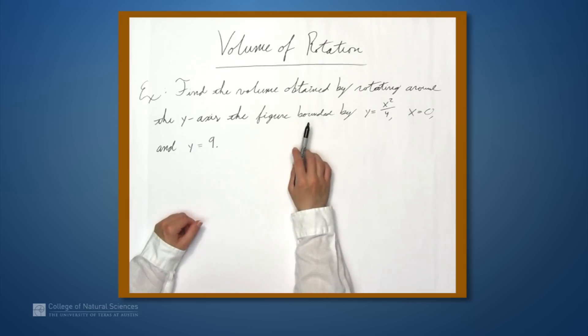In particular, we're going to find the volume obtained by rotating around the y-axis, the figure bounded by y equals x squared over 4, x equals 0, and y equals 9.